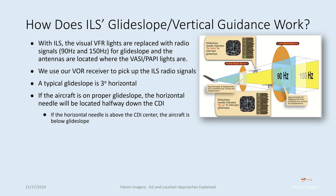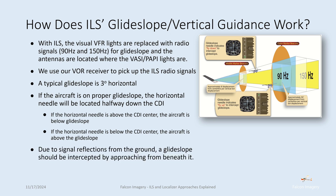If the horizontal needle is above the CDI center, the aircraft is below glide slope. If the horizontal needle is below the CDI center, the aircraft is above the glide slope. Due to signal reflections from the ground, the glide slope should be intercepted by approaching from beneath it. If you approach from too high an altitude, you may be on one of these reflected signals and not receive accurate glide slope information. So it's always important to intercept the glide slope from beneath.